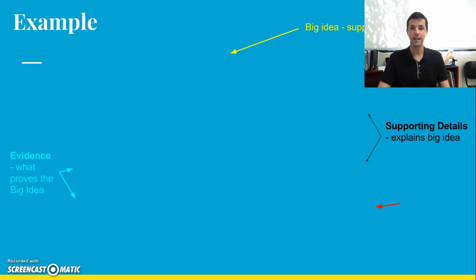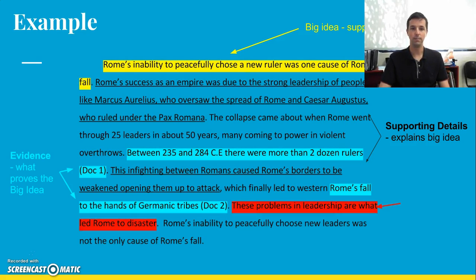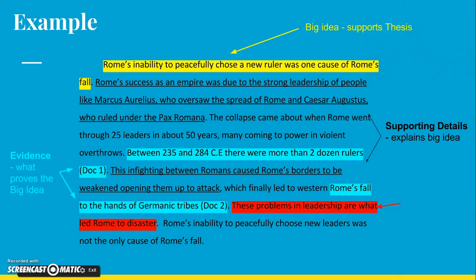Let's see what this looks like in an already written paragraph. Now most of the paragraph has already been diagrammed for you. Let me make myself disappear so you can see it. Big idea supporting the thesis is up in there in yellow. Your supporting details explain your big idea.